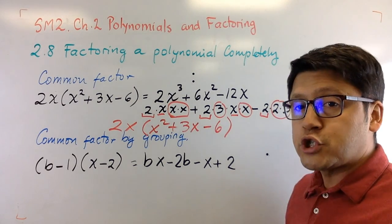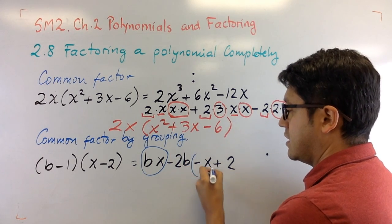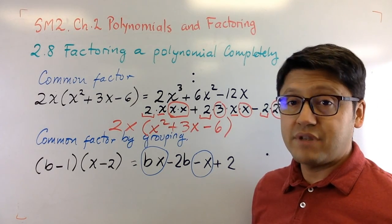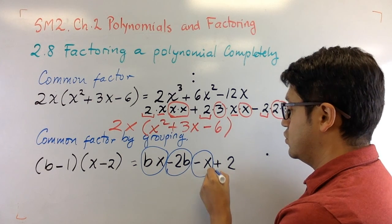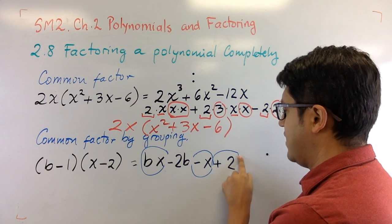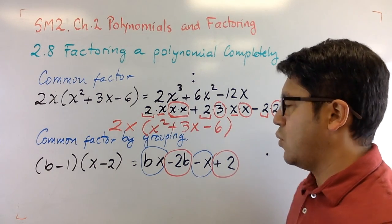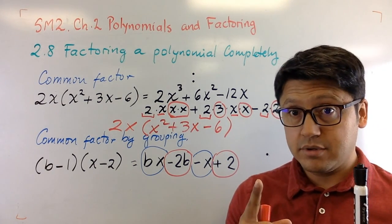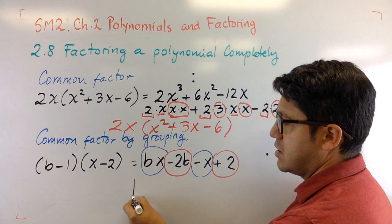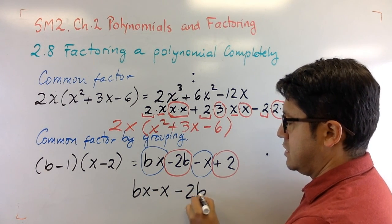Because, let me do this. I'm going to circle in blue those that have x in common. x and x. How about these two? What do they have in common? They have number two in common. Two and two. Sorry, I should have done it with a red to make it more evident. Look at this. Red here. Red here. So the ones in blue have x in common. Correct? So I would say, okay, I'm going to pull out that x. Well, you know, I'm going to rearrange this better. bx - x - 2b + 2. And now, here we go.